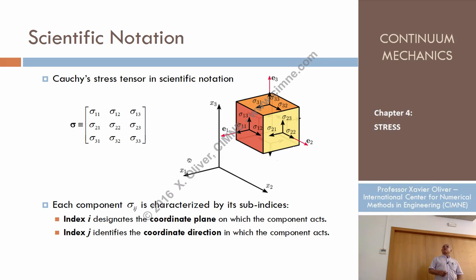So now let's talk a little bit about the notation. The notation that we have used so far is that one, sigma ij. This is a way to represent this.